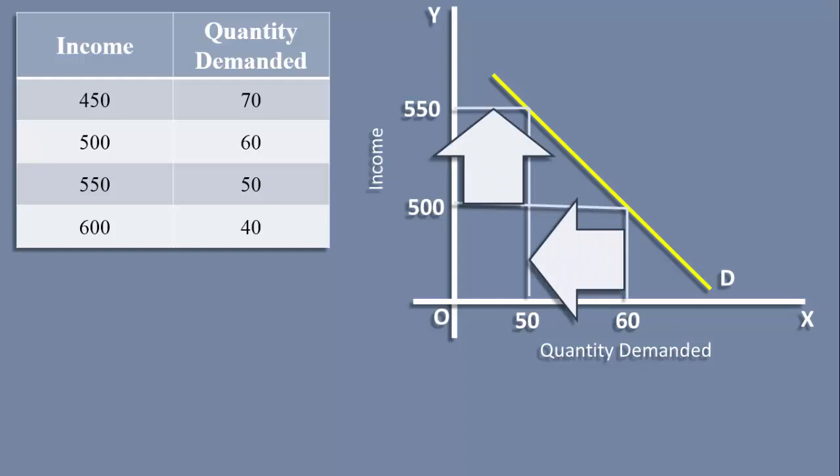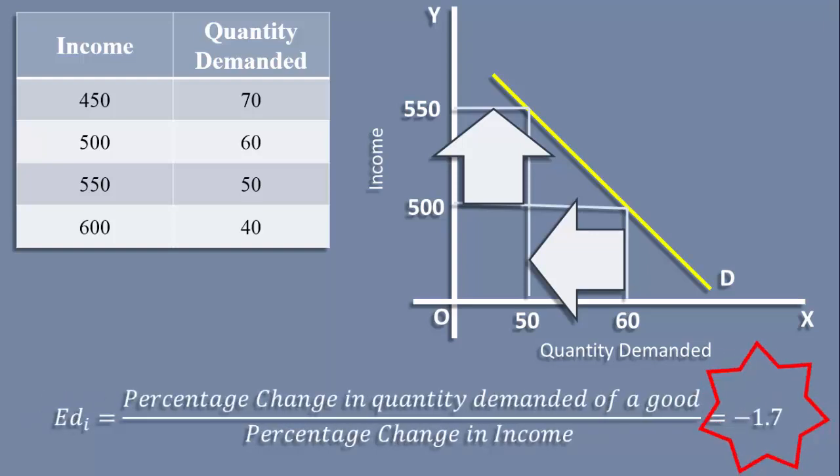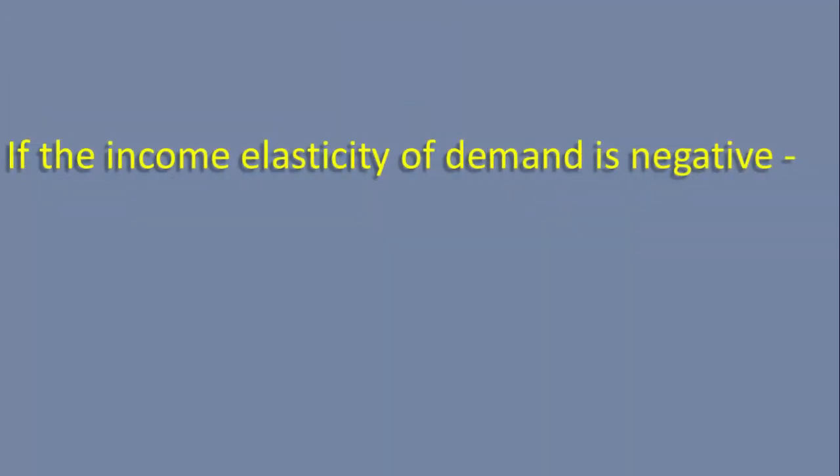Its income elasticity in the income range 500 to 550 rupees is -1.7. Its income elasticity is negative. So we can say, if the income elasticity of demand for a good is negative, then that good is said to be an inferior good.